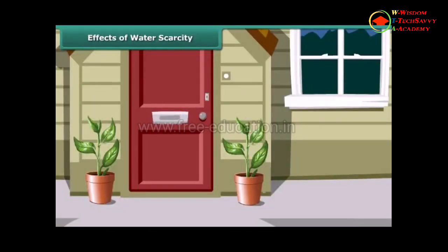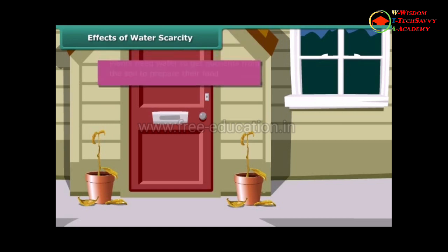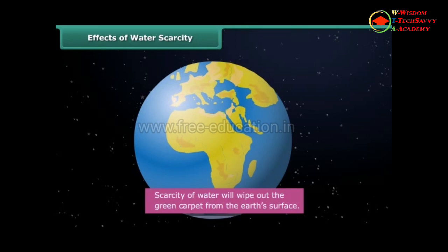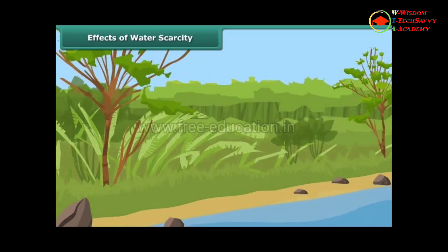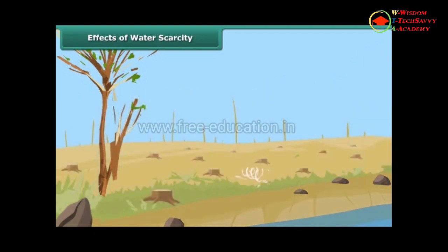Let us study the effect of water scarcity on plants. You are out on holiday; when you return home after a week, you see that your plants have wilted. They did not get water for a week. Plants need water to get nutrients from the soil and to prepare their food; non-availability of water causes them to wilt and ultimately die. Thus, scarcity of water will wipe out the green carpet from the earth's surface, resulting in less rainfall and reduced oxygen supply. Loss of plants and trees also means loss of food. Prolonged scarcity of water will make survival of every life form impossible on earth.